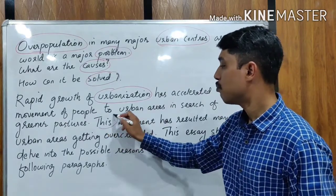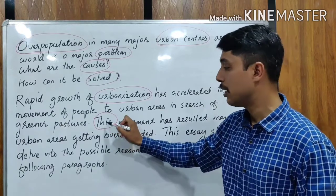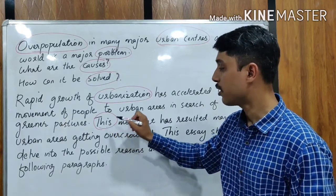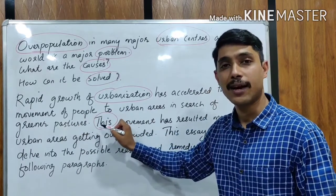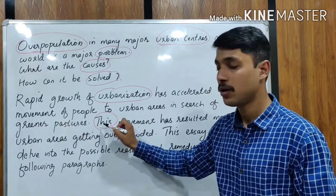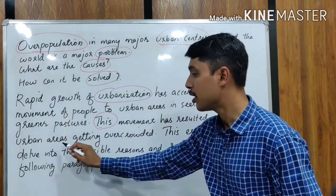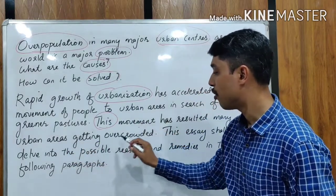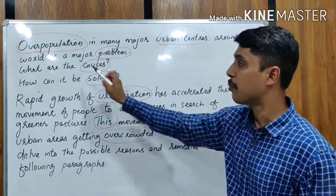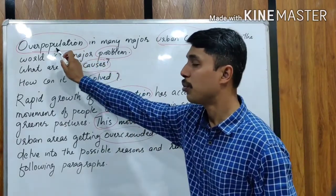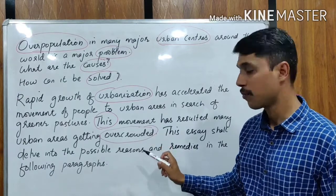The word 'this' in 'this movement' is very important because it connects the general statement to the next sentence — it acts as a connective. So: 'This movement has resulted in many urban areas getting overcrowded.' Here we are stating the problem — overpopulation — using the word overcrowded, which means the same thing.